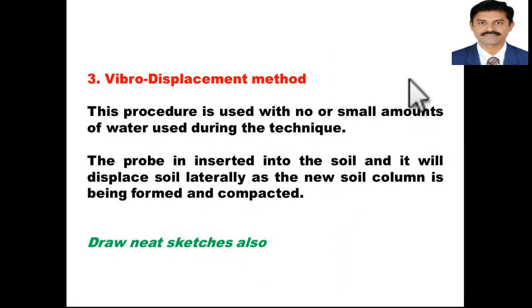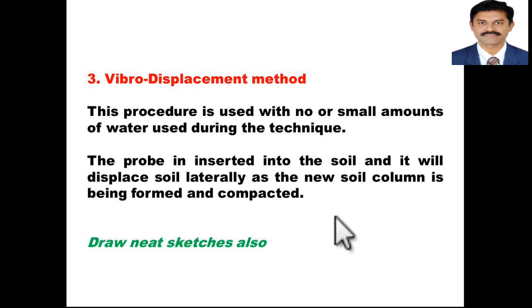In the Vibrodisplacement method, no or only a small amount of water is used. The probe is inserted into the soil and displaces soil laterally, as a new soil column is formed or compacted.